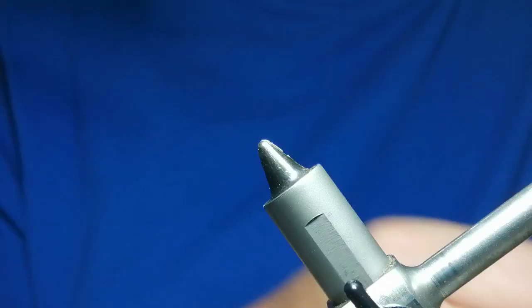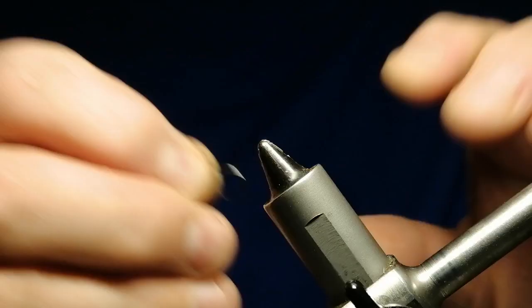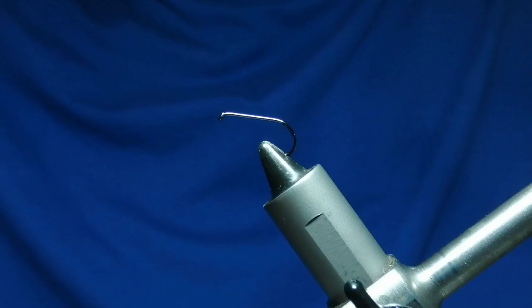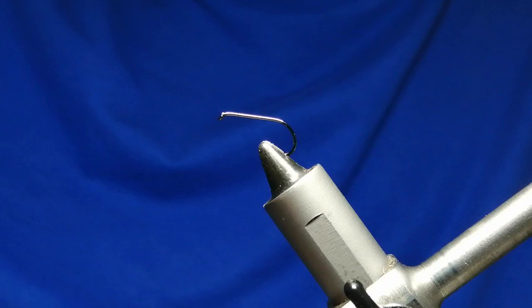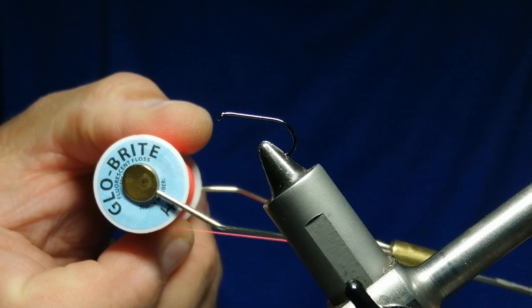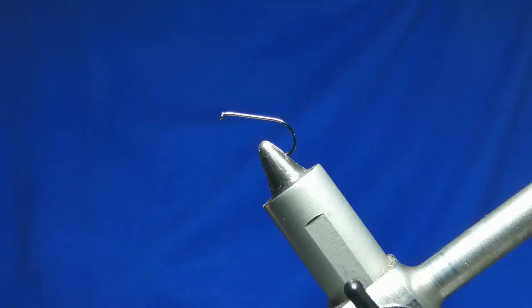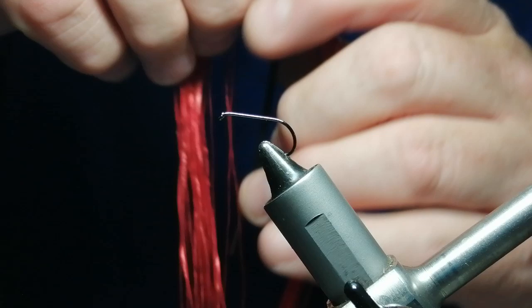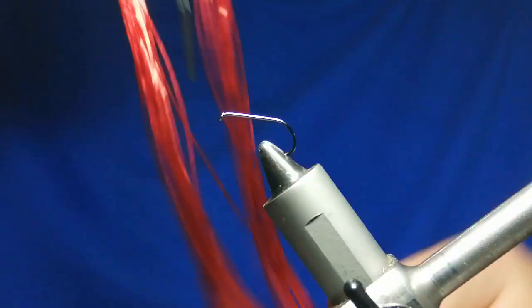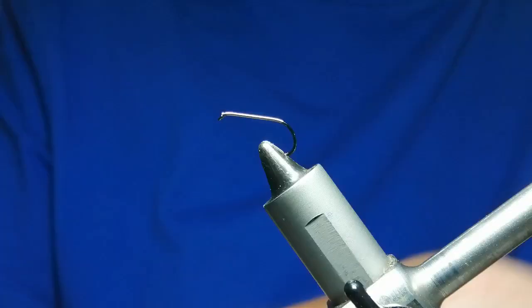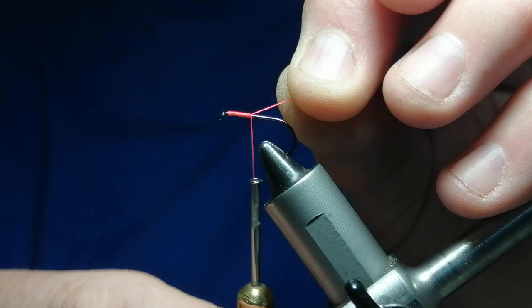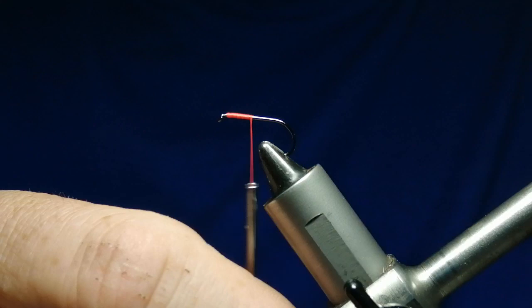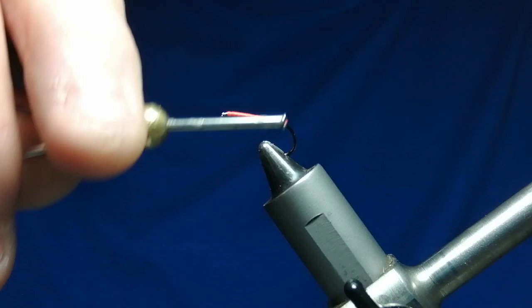The hook I'm going to put in the vice is a size 10 Hanak 230 BL. The thread I'm going to tie with is the body glow bright number four, and the legs and rib is blood red flexi floss. Basically that's all there is to the fly. So we'll start off just behind the head towards the bend.